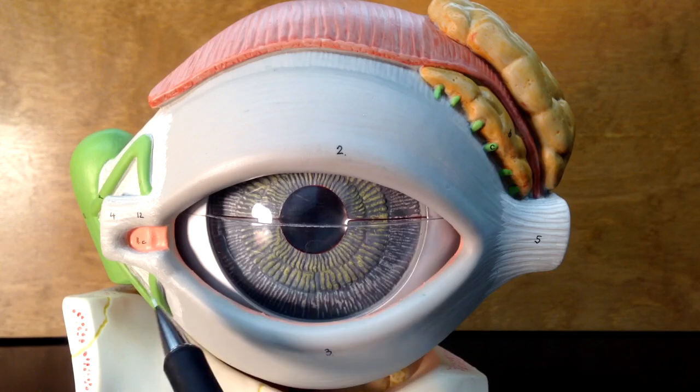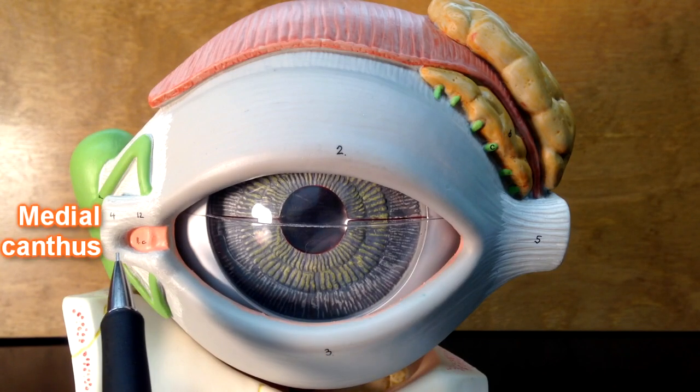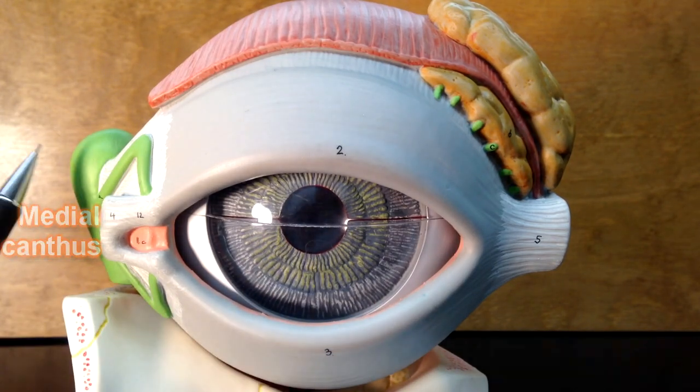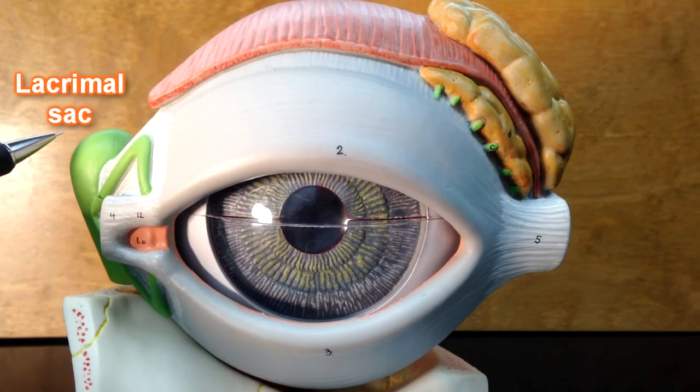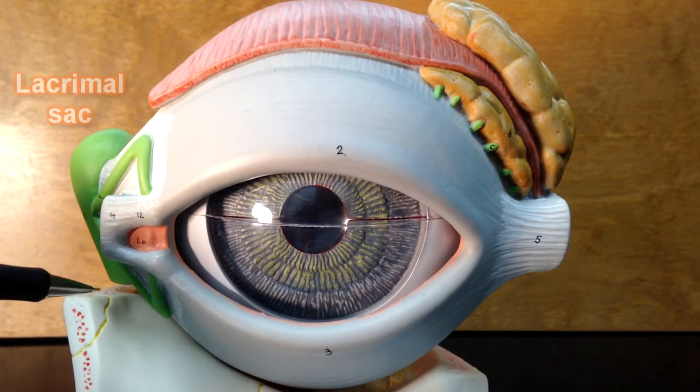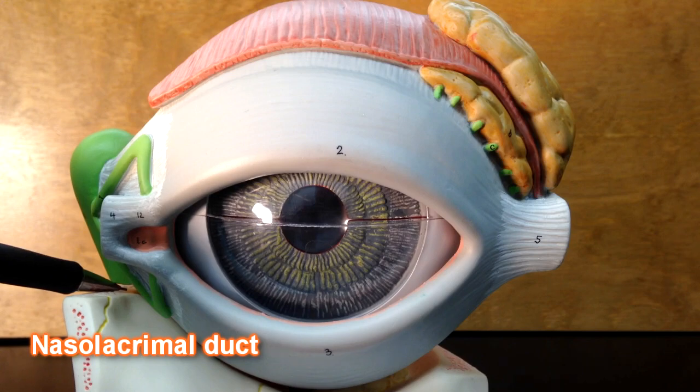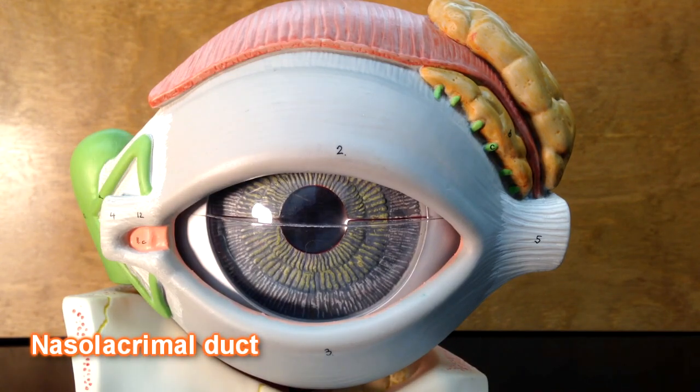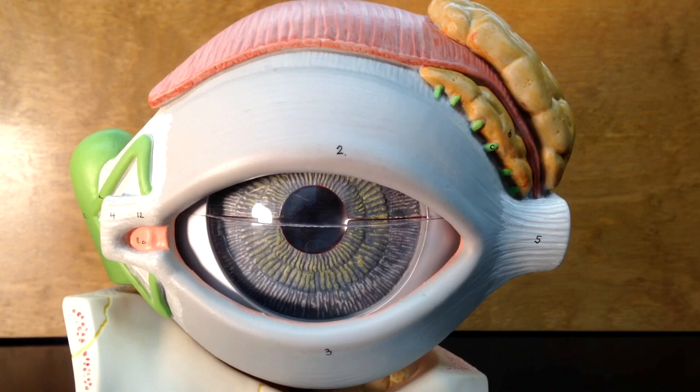This would be the medial aspect over here where the medial canthus is. We can see the lacrimal sac over here. They would collect the tears and bring the tears down into the nasolacrimal duct which would bring the tears into the nasal cavity. This is why we get a runny nose when we cry.